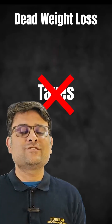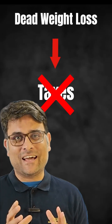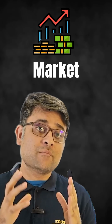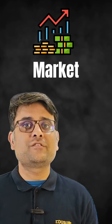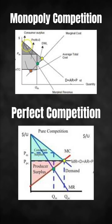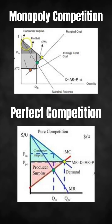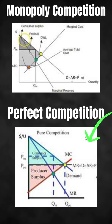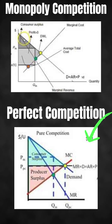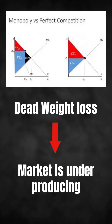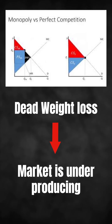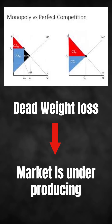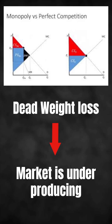Deadweight loss is not only due to taxes imposed on a particular market — it can happen because of the market itself. Like in the case of a monopolist, if I compare it with perfect competition, which is the most efficient market, in the case of a normal monopolist, we get a deadweight loss because the market is underproducing.